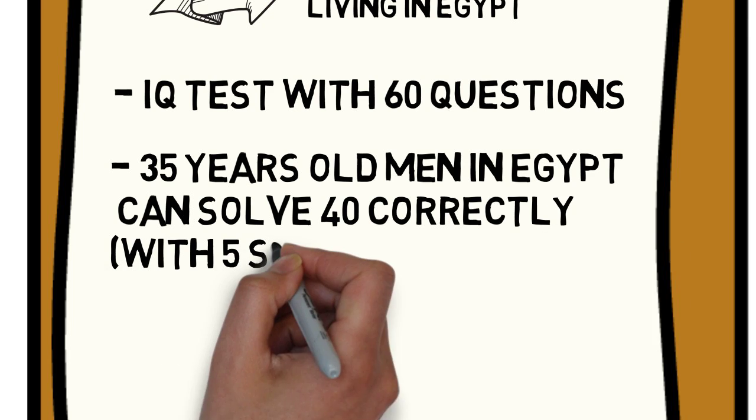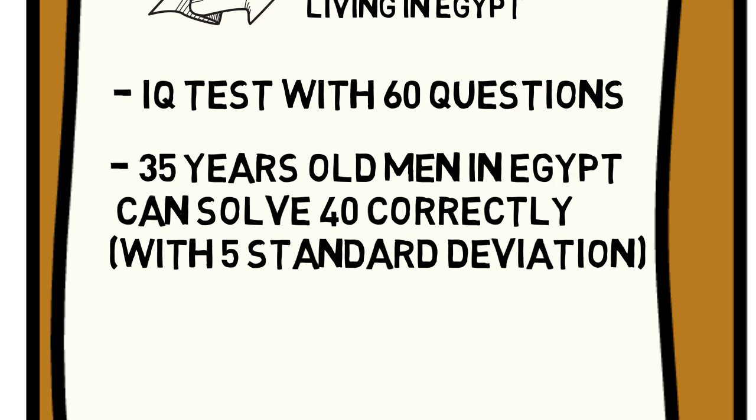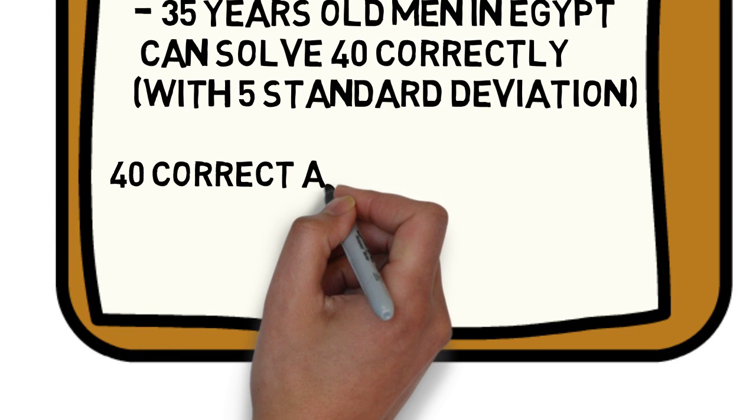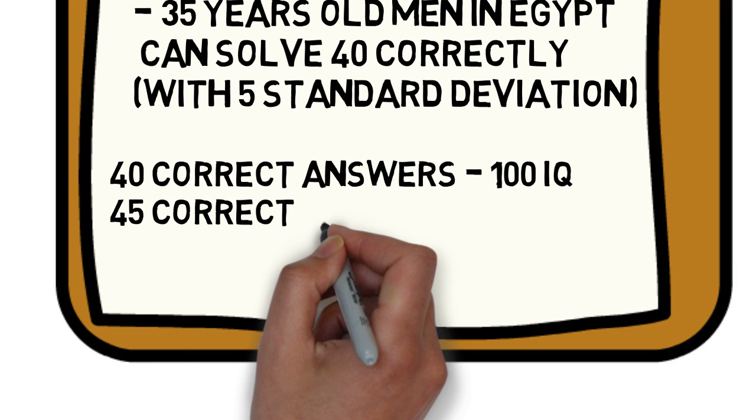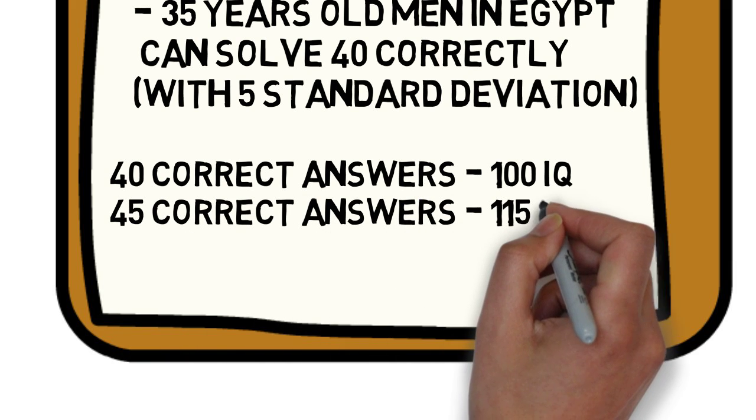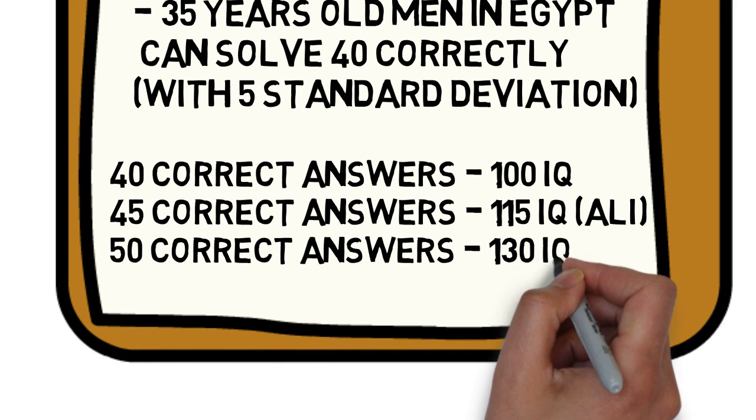And 35 years old men in Egypt can answer 40 questions correctly with a standard deviation of 5. So a 35 years old man who can solve 40 correctly has 100 IQ points. Ali could solve 45 tasks and has 115 IQ points and is at the upper end of the average performance.